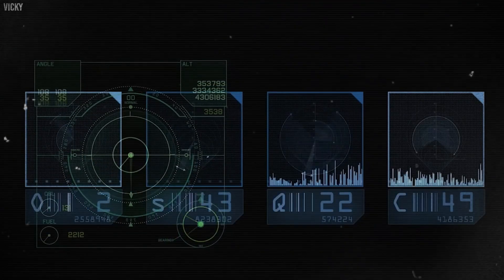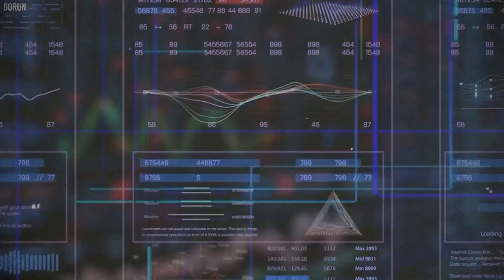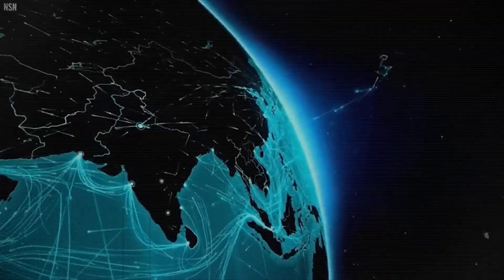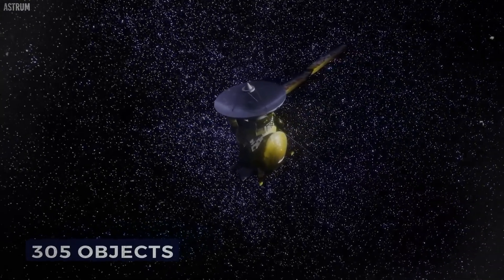Voyager 2 was actually launched first on August 20th, 1977. Voyager 1 followed about two weeks later, lifting off on September 5th, 1977.